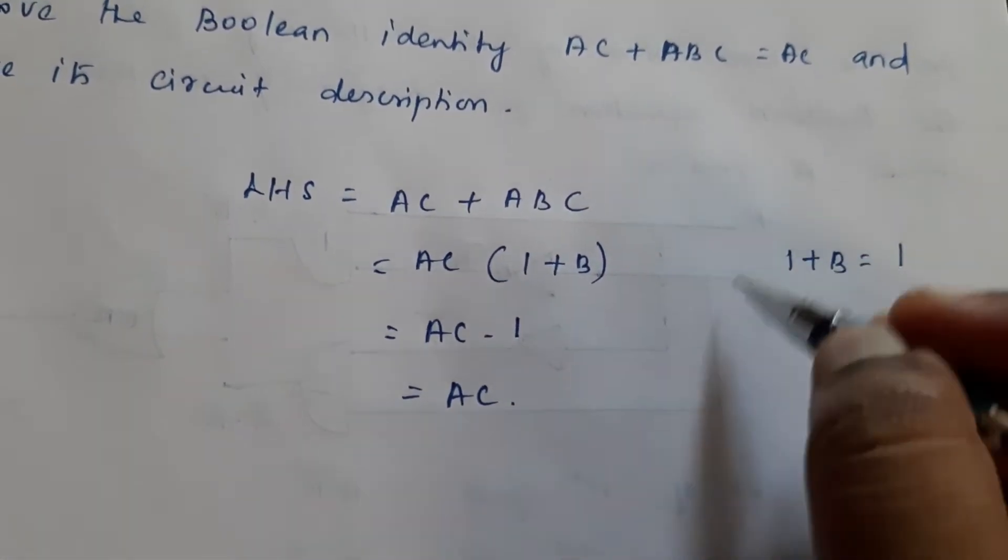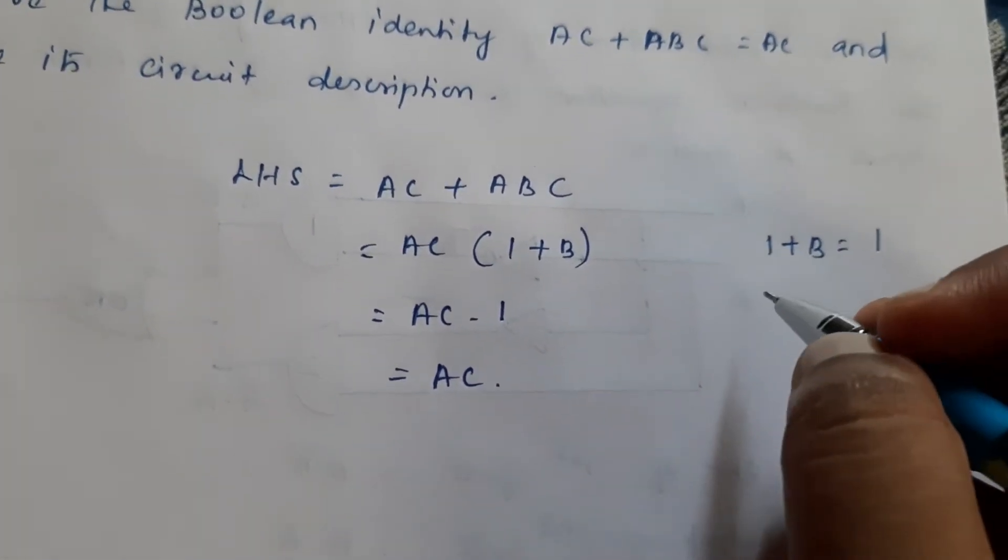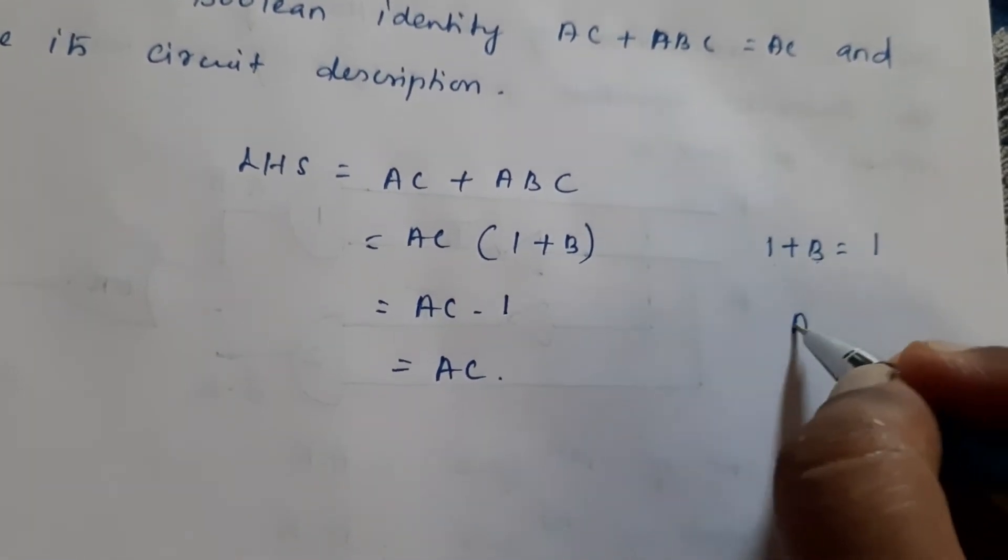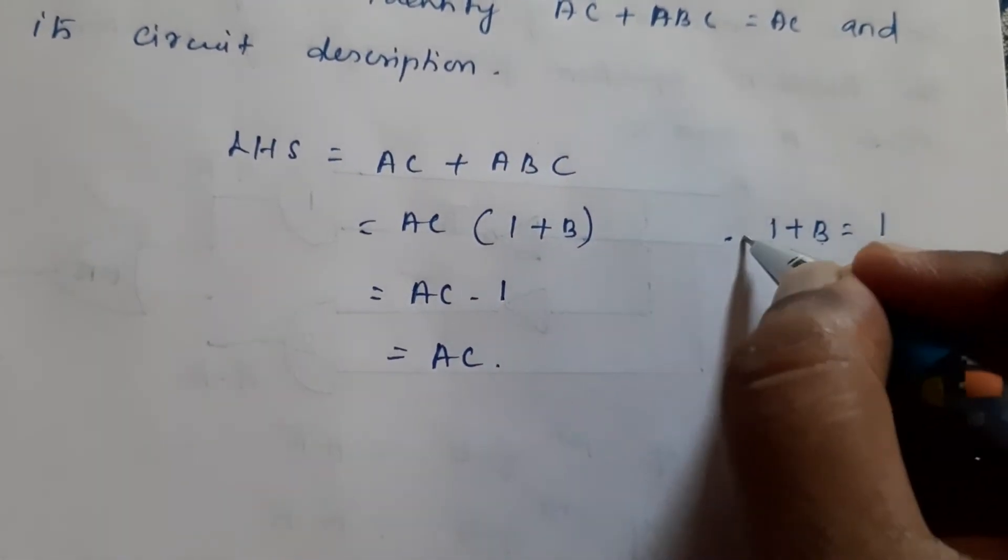So here we are using Boolean laws. Here we are using which law? Boolean laws. What are the Boolean laws we are using? Here 1 + B is equal to 1. Here A times 1 is equal to A. So this is the laws we are using.